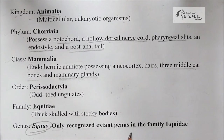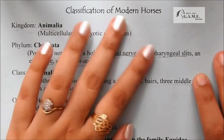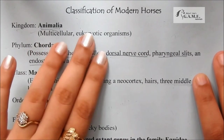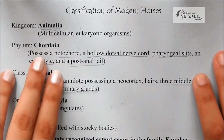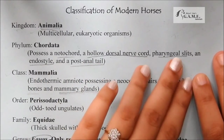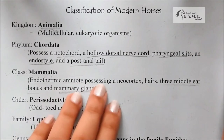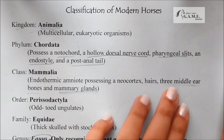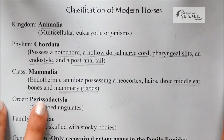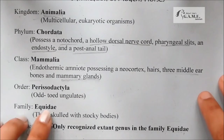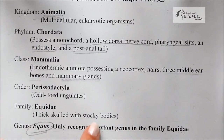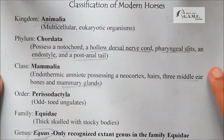Now it's time for a revision of the classification. Kingdom Animalia — multicellular eukaryotic organisms. Phylum Chordata — notochord, hollow dorsal nerve chord, pharyngeal slits, endostyle, and post-anal tail. Class Mammalia — endothermic amniote with neocortex, hairs, three middle ear bones, and mammary glands. Order Perissodactyla — odd-toed ungulates. Family Equidae — stocky bodies. Genus Equus — the only recognized extant genus in Family Equidae.